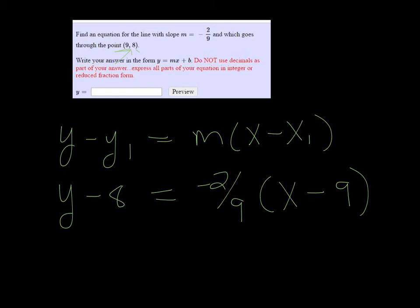And then just distribute and solve for y, so we have y minus 8 is equal to negative 2 ninths x plus 2.